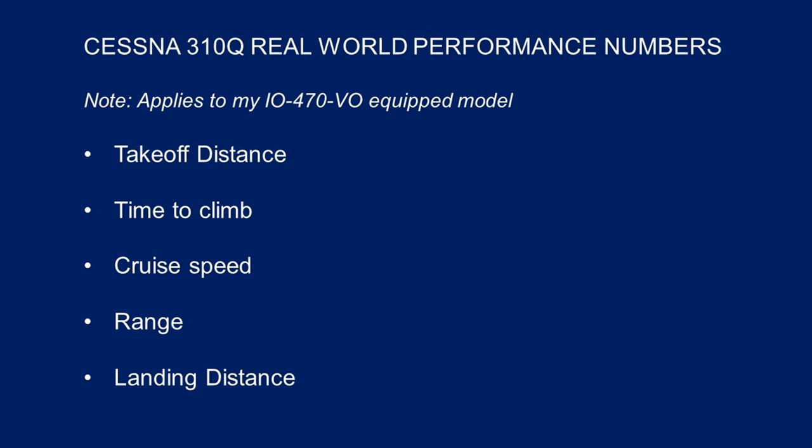What you really see as an owner and operator of a Cessna 310Q — which is what I have — out in the real world. My airplane is equipped with two Continental IO-470 VO, 260 horsepower, six-cylinder, normally aspirated engines. It's a 1974 310Q.